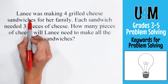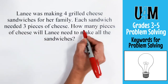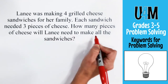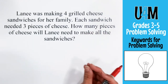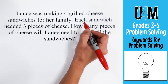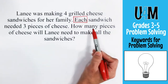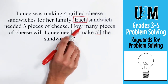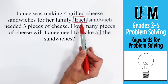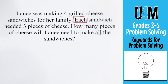So let's take a look at a multiplication problem and find those keywords. In this problem, Lainey was making four grilled cheese sandwiches for her family. Each sandwich needed three pieces of cheese. How many pieces of cheese will Lainey need to make all of the sandwiches? Even though we have terms like 'how many,' they're not paired with fewer, less, or leftover. We're really looking for the key term 'each,' because that tells us we have different groups with a certain amount in each group — so that makes this problem multiplication.